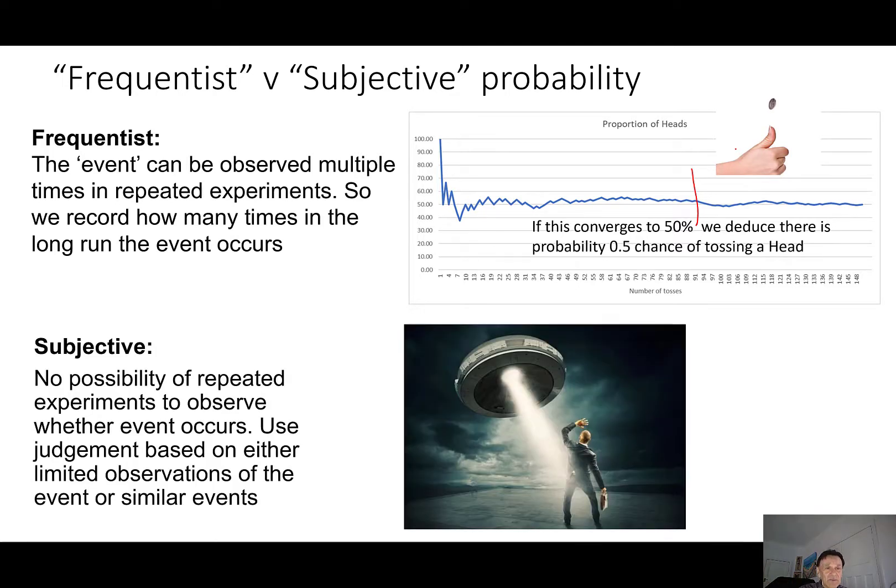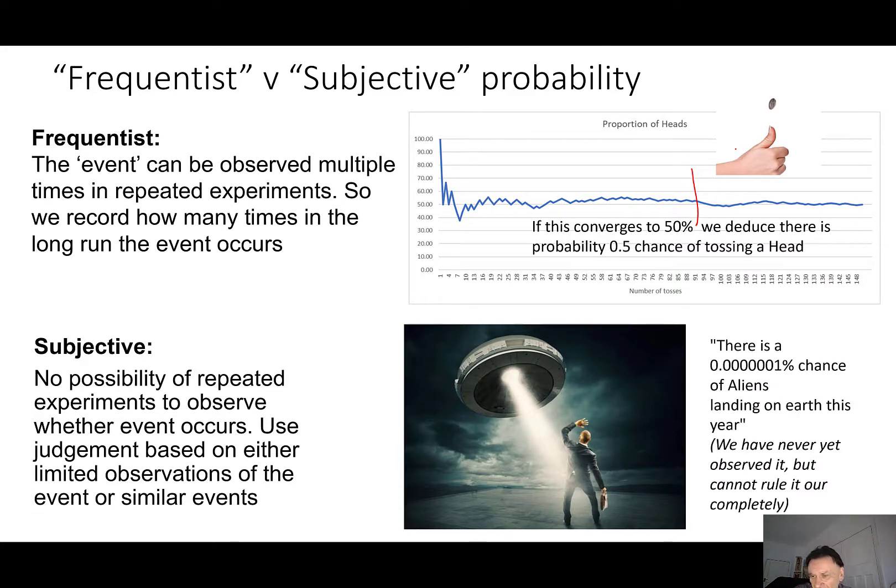Now in contrast with the subjective approach, we accept that we can't possibly repeat experiments to observe whether the event occurs. So we have to use judgment based on either limited observations of the event or similar events. So we might decide that's incredibly low, 0.00001% chance of aliens landing on Earth this year. Now we've never observed an event like that, but it kind of like seems wrong to completely rule it out.